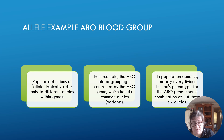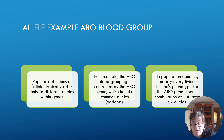An allele example in humans is the ABO blood group. Popular differences refer to two different alleles within genes. The ABO blood grouping is controlled by the ABO gene, which has six common alleles or variants. In population genetics, every living human's phenotype for the ABO gene is some combination of just these six alleles — resulting in blood types O, A, B, AB, each positive or negative.